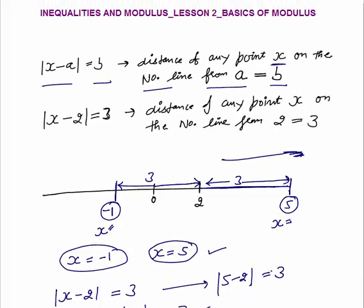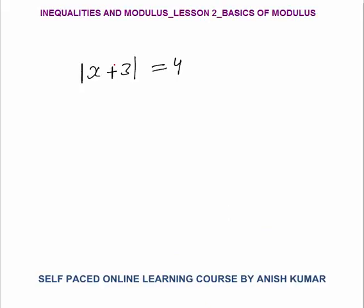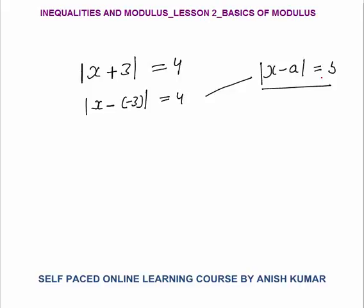This is a fundamental concept of modulus. Now consider modulus of X plus 3 equals 4. We rewrite it as modulus of X minus (minus 3) equals 4, which matches the format modulus of X minus A equals B. This means the distance of any point X on the number line from minus 3 is equal to 4.